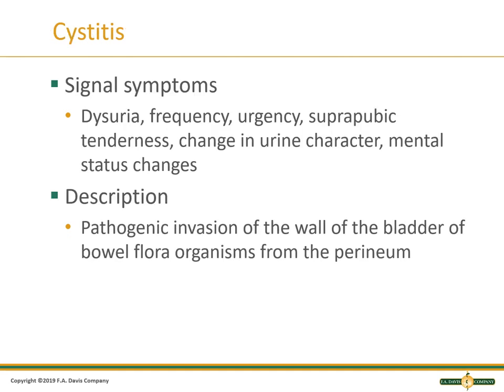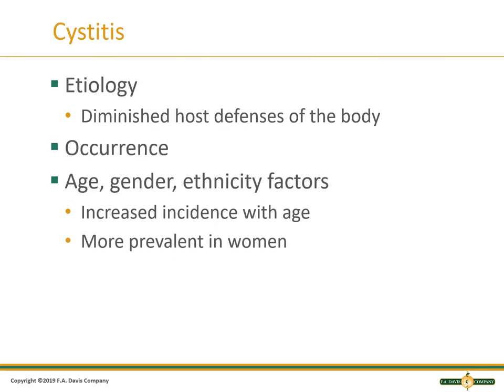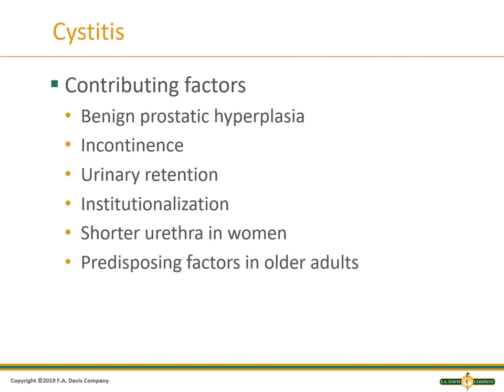Cystitis is very common. You can have dysuria and UTI symptoms. This is where you get the pathogen that goes into the wall of the bladder. You can get E. coli from the bowel, from the perineum, that travels up. Increased incidence with age; it's more prevalent in women because of our anatomy. Factors that can contribute: in men, you have BPH; in men and women, you have incontinence and urinary retention. Institutionalization is a concern regarding hygiene and access to voiding. Shorter urethra in women and predisposing factors as we age.